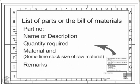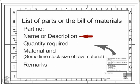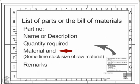List of Parts or Bill of Materials. When drawings of a number of constituent parts of an object are drawn in a single drawing sheet, a list of these parts should be placed above or beside the title block in a tabular form. It should provide the following minimum particulars for each part: part number, name or description, quantity required, material, and sometimes stock size of raw material and remarks.